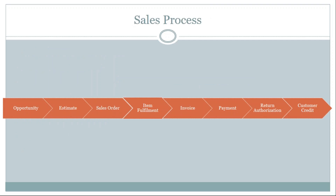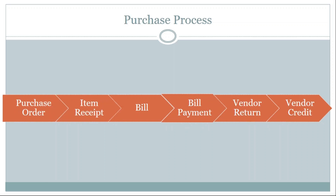The sales process begins once the CRM process converts a lead to a customer. The customer starts purchasing products, and the NetSuite client creates an opportunity record. The client then provides an estimate, a sales order is raised, followed by fulfillment, invoice processing, and payment processing. If there are any returns, return authorizations are created, and the customer is credited back. This complete cycle is called the sales process.